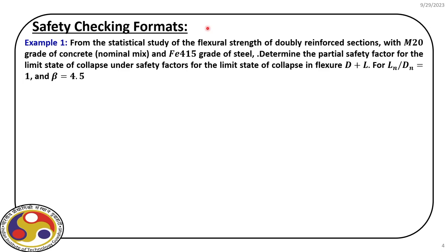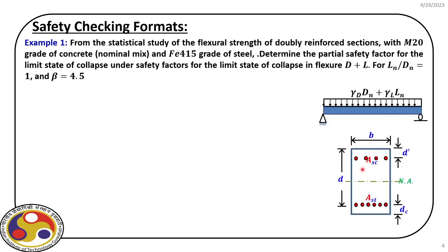If we consider an example, let us see how we can apply this and find out partial safety factors for a target reliability level. In the first example, we consider a doubly reinforced beam — a simply supported beam having tension and compression steel — with width b and effective depth d, using M20 concrete (nominal mix) and Fe 415 grade steel. We determine partial safety factors for dead load plus live load when Lₙ/Dₙ equals 1 and the target reliability level is 4.5.